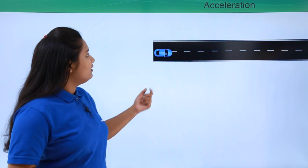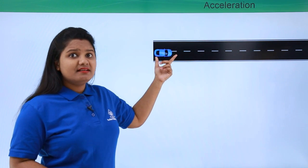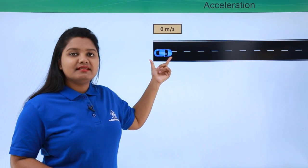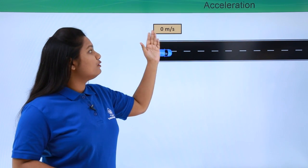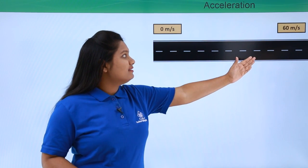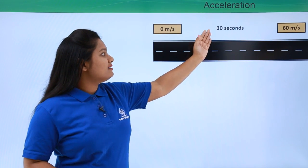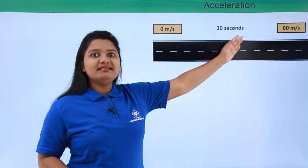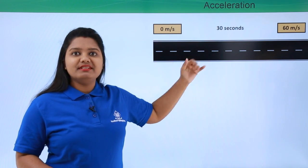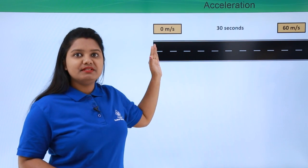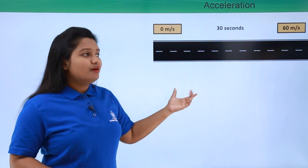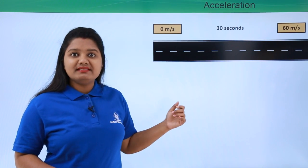Let's say there is a straight road and a car is standing still. Since the car is at rest, its velocity is 0 meters per second. When it starts moving, 30 seconds later its velocity is 60 meters per second. There has been a change in the velocity of this car in 30 seconds — from 0 meters per second to 60 meters per second. This motion is associated with acceleration.